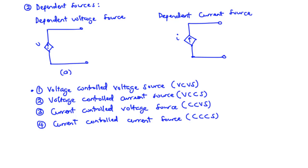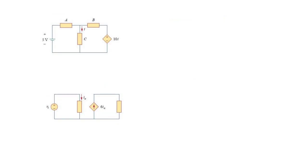Now, to clearly understand the various sources, let's consider two electric circuits and try to identify the elements as well as the sources in the circuit. So we have two circuits here — circuit one and circuit two — and what we are going to do is identify the elements as well as the independent and dependent sources.